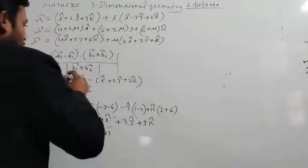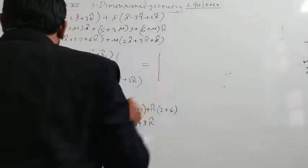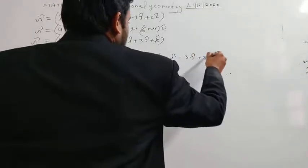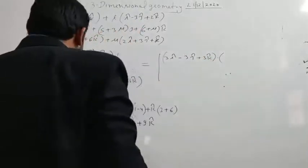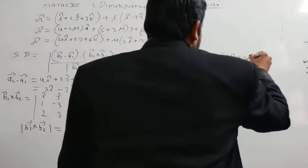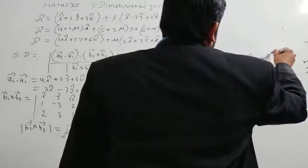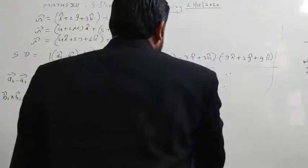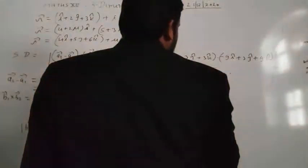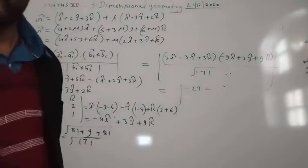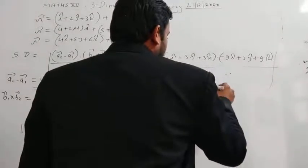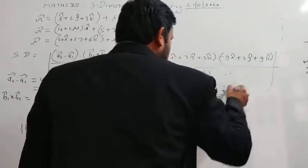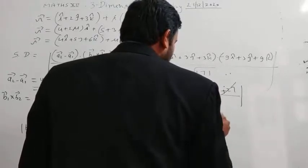Putting all values in the shortest distance formula: (a2 minus a1) · (b1 cross b2) = (3i + 3j + 3k) · (minus 9i + 3j + 9k) = minus 27 + 9 + 27 = 9. The magnitude of b1 cross b2 is under root 171. So the shortest distance is 9 / under root 171.